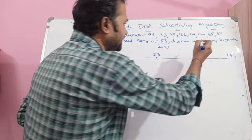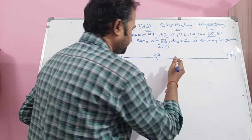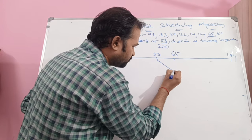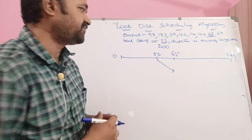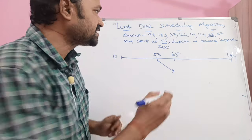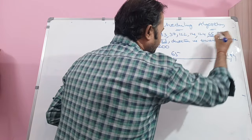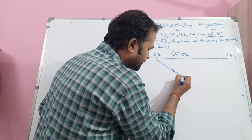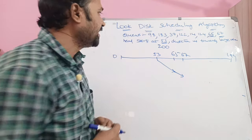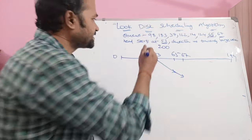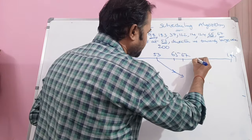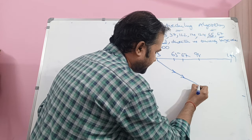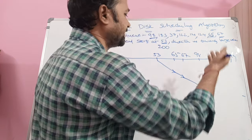After 53, the next highest value is 65, so we serve the request at cylinder 65. After 65, we have 67, so we serve the request at cylinder 67. After 67, the next largest value is 98, so we access the data at cylinder 98.